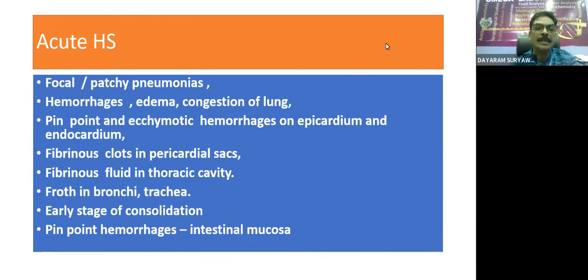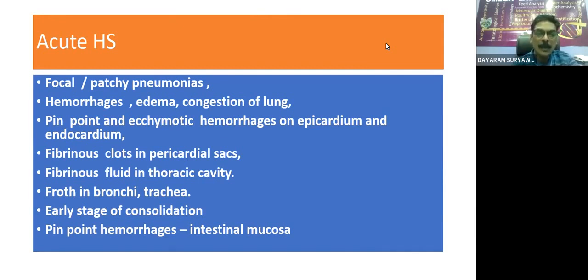Accordingly, we can find different post-mortem lesions. These include focal or patchy pneumonia, hemorrhages, edema, congestion of the lung, pinpoint hemorrhages, and ecchymotic hemorrhages on the epicardium and endocardium. Fibrinous clot can be present in the pericardial sac. Fibrinous fluid may be present in the thoracic cavity. Froth can be noticed in bronchi and trachea. Early stage of consolidation can be seen, and pinpoint hemorrhage on the intestinal mucosa whenever the intestines are involved.